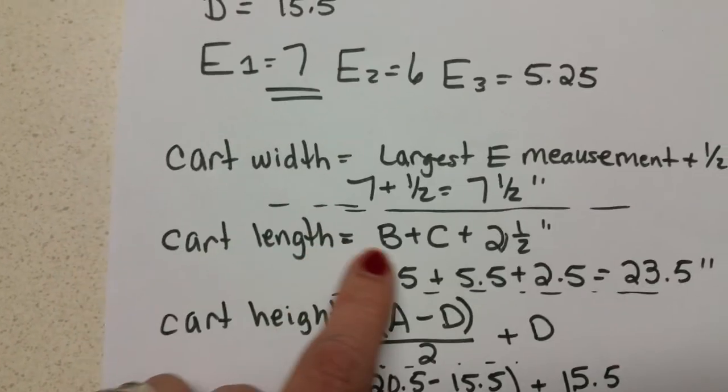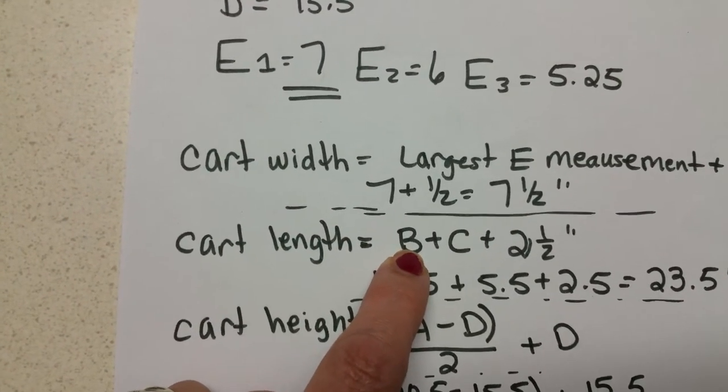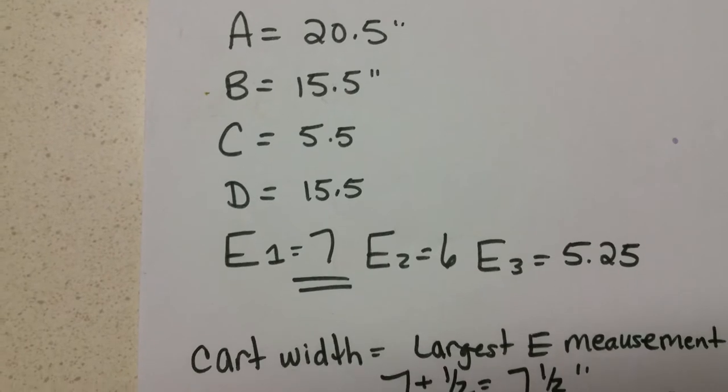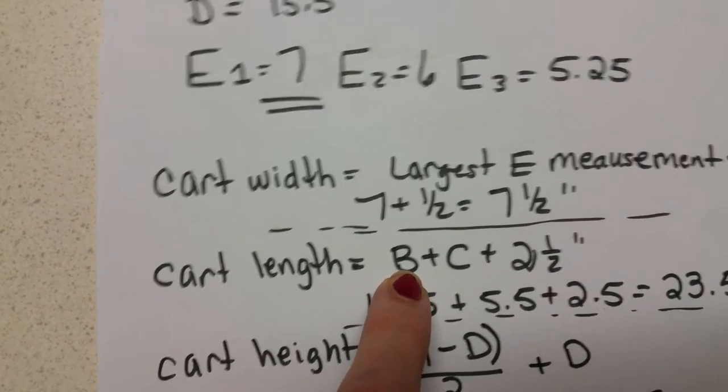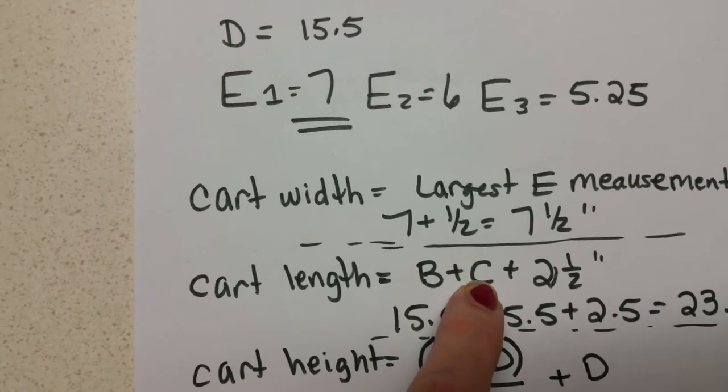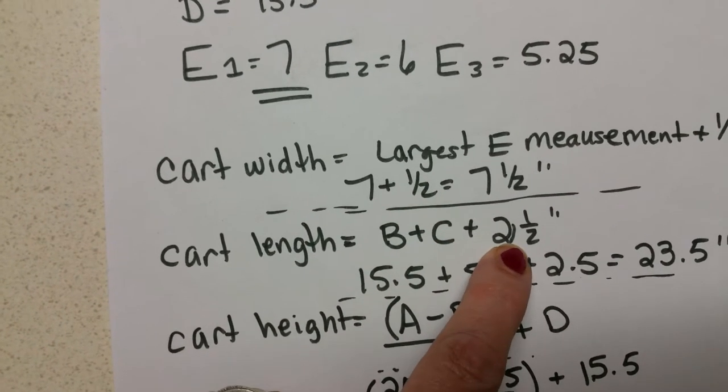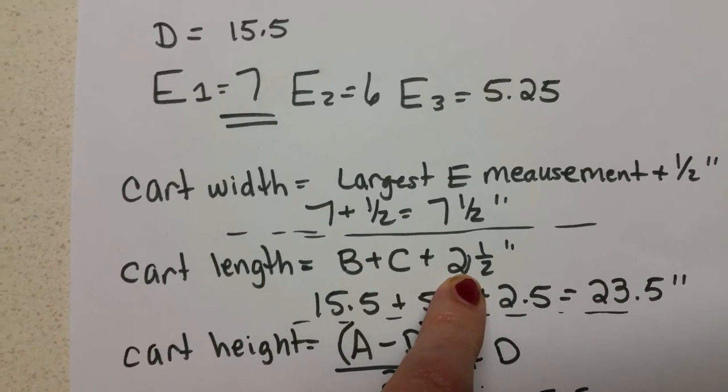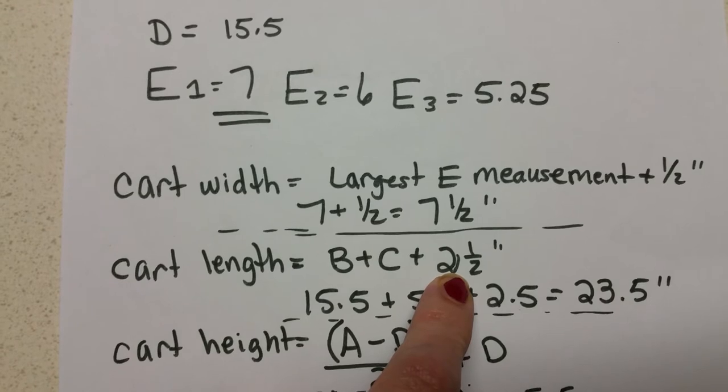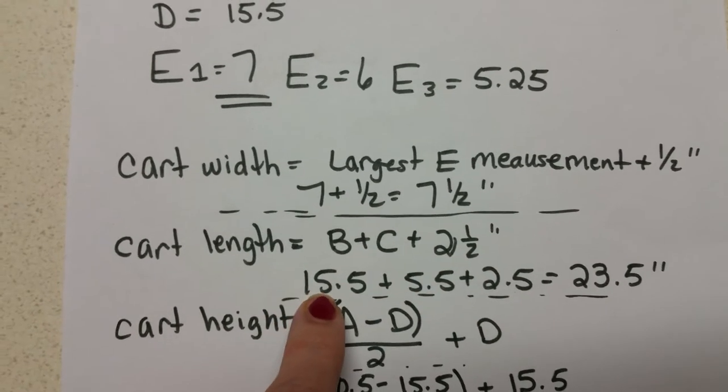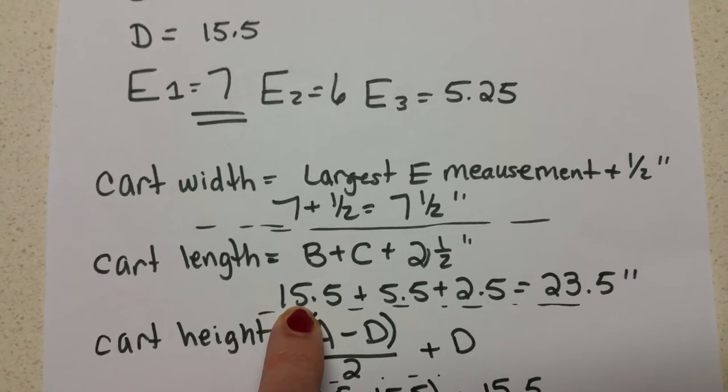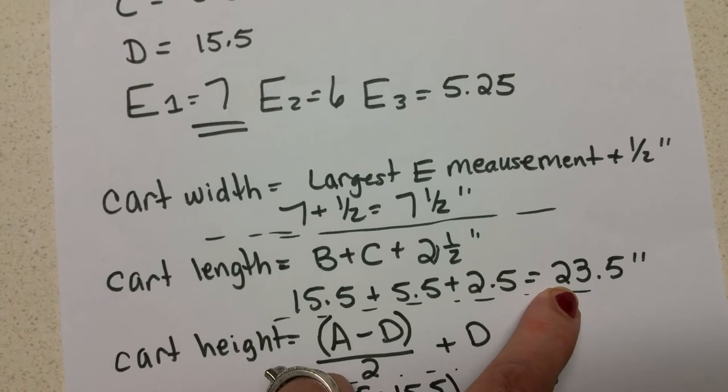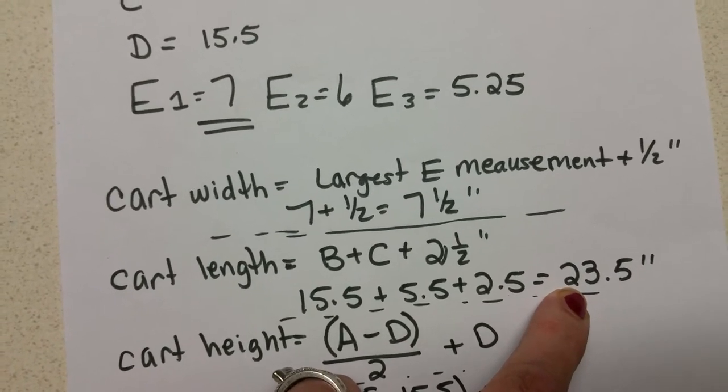To figure out cart length we're taking the B measurement, which was the distance from the middle of the front shoulder to the beginning of the back leg, plus the C measurement which is the back leg, and then we're adding two and a half inches for an average size dog. So for us in this example that's fifteen and a half plus five and a half plus two and a half gives us that our cart length is going to be twenty three and a half inches.